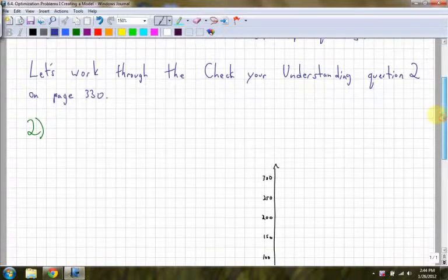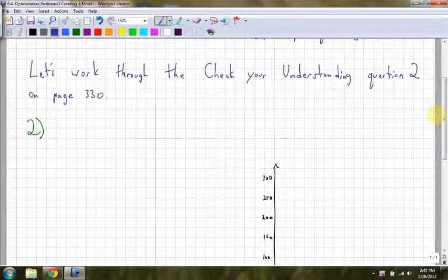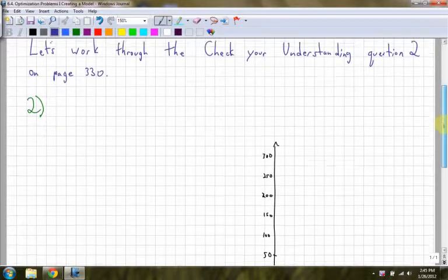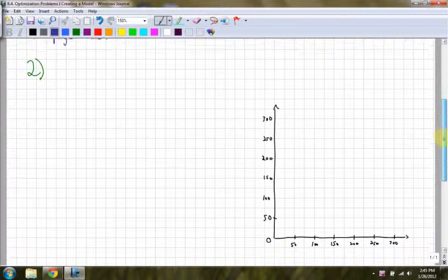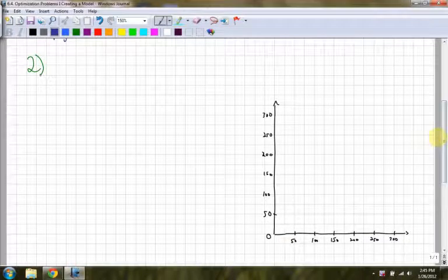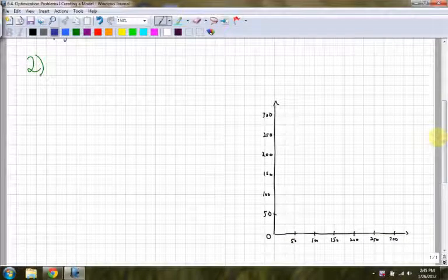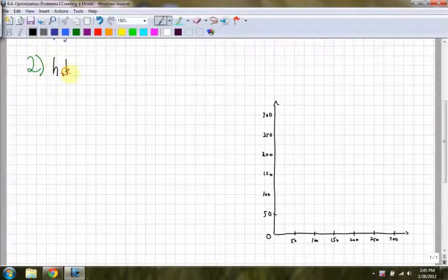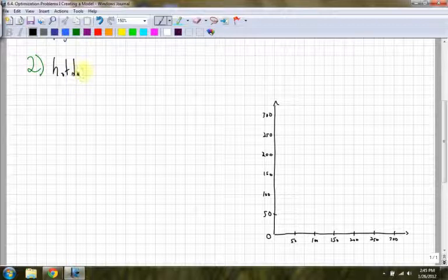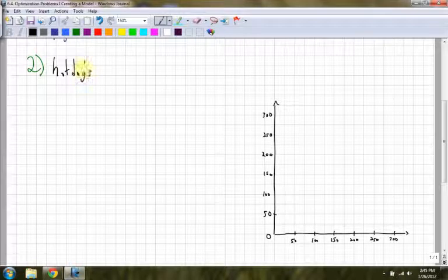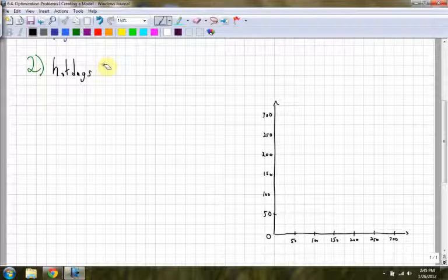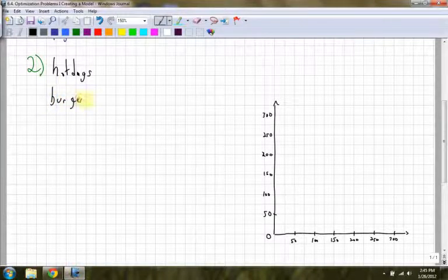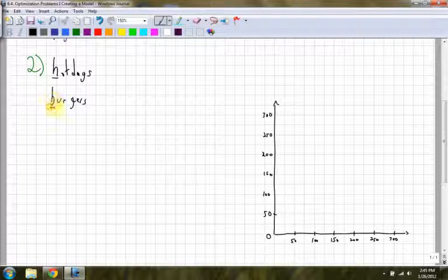The example I'm going to work through is the check your understanding question on page 330, question number 2. Because most of the questions are set up the same way as this one. Question 2 says a fast food concession stand sells hot dogs and hamburgers. I'm going to use burgers so that I have two variables, b and h.